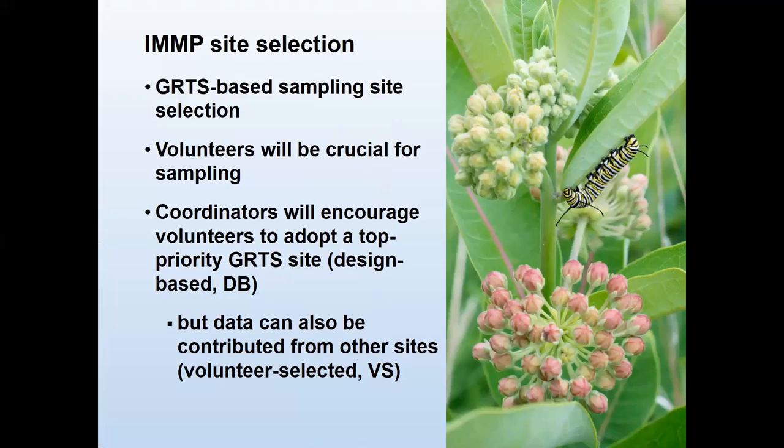Because this is continental, covers many land use sectors over a long period of time, and we don't have funding for that, we're going to be relying on volunteers — this is where citizen science comes in. Luckily, monarchs are charismatic, visible, and easily identifiable. Everybody knows what a monarch is. They have a history of attracting volunteers for citizen science programs, so we're relatively optimistic we can get people involved.